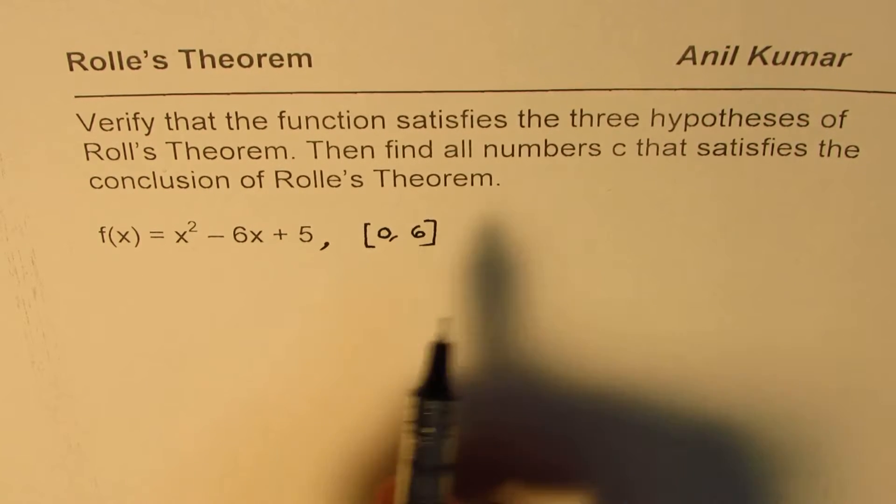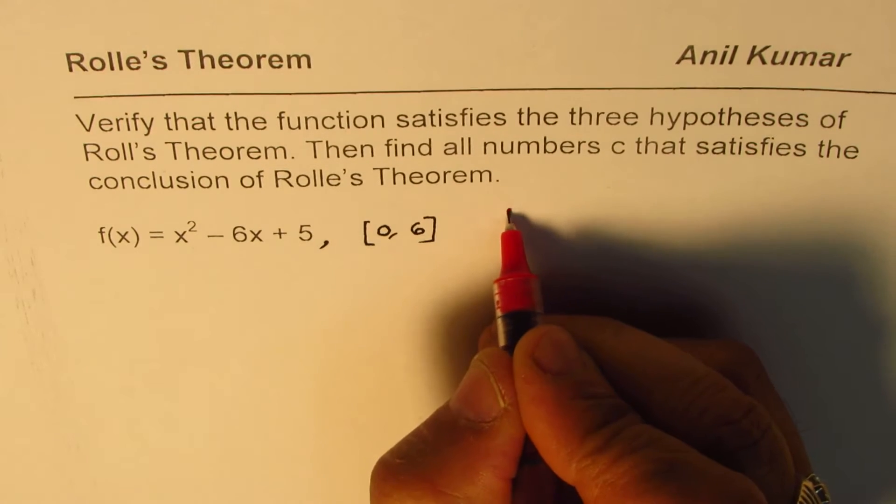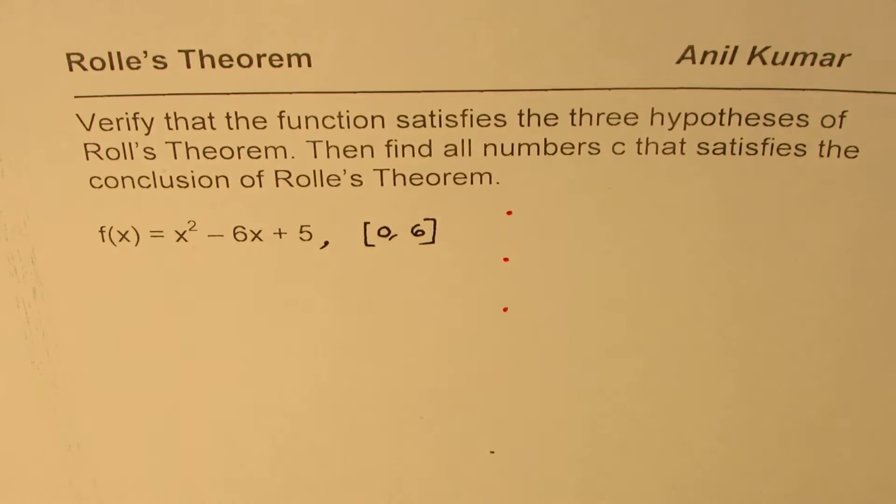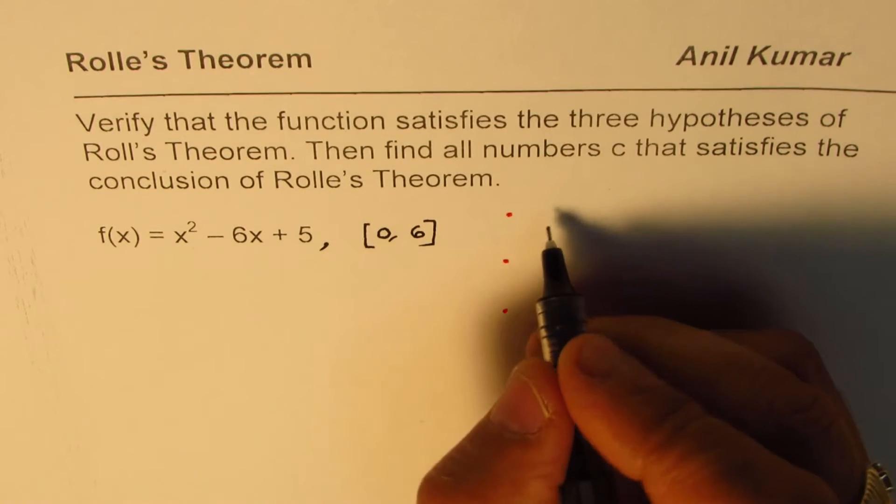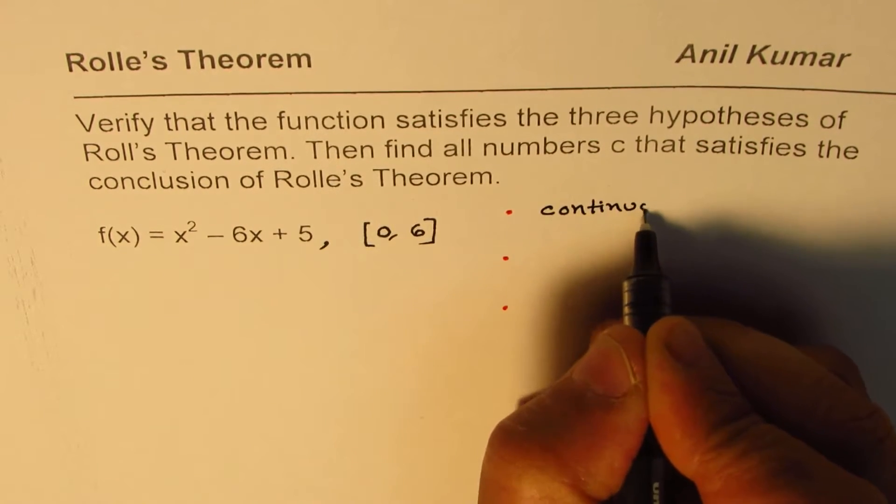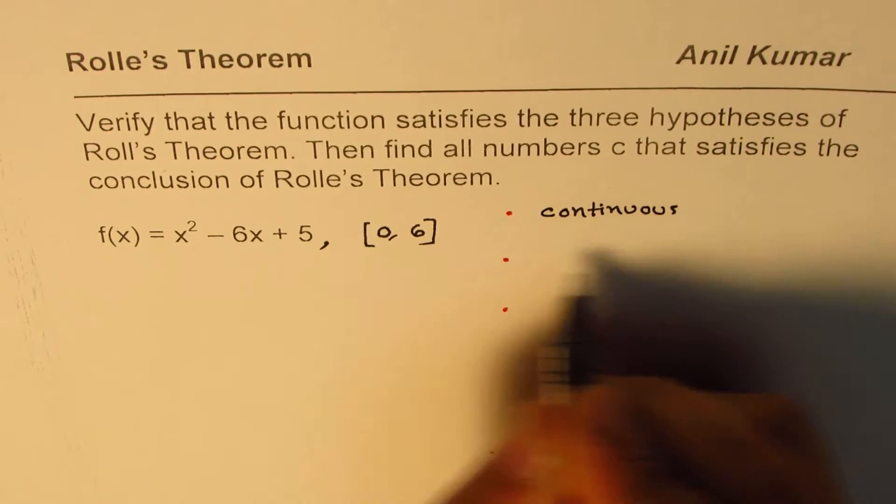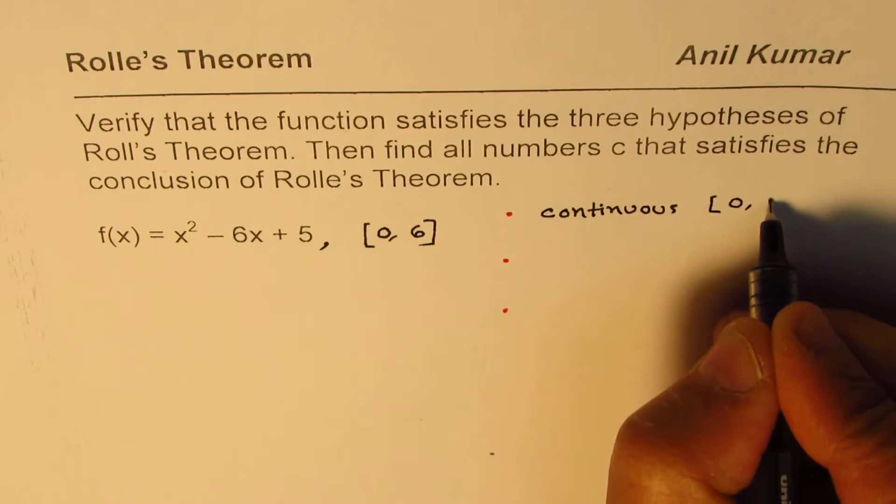Now, Rolle's theorem has three hypotheses as mentioned here. The first one is, let me write down these three hypotheses one by one, and then we'll verify. So, the first one is that the function should be continuous. We are looking for continuous in the closed interval, and the interval given to us is from 0 to 6.